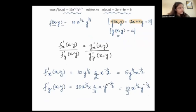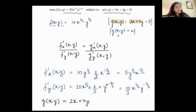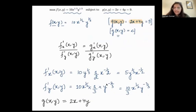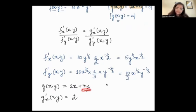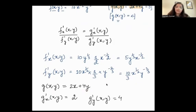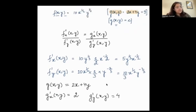Now for the constraint function g(x, y) = 2x + 4y. What is g prime x? It is 2, since 4y treated as constant gives 0. And g prime y is 4. So now I will use the equation and plug in all these values.